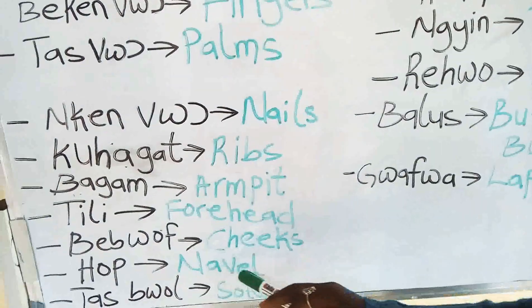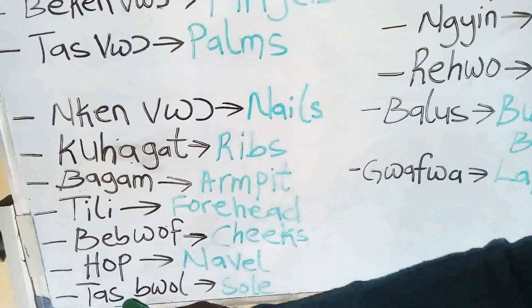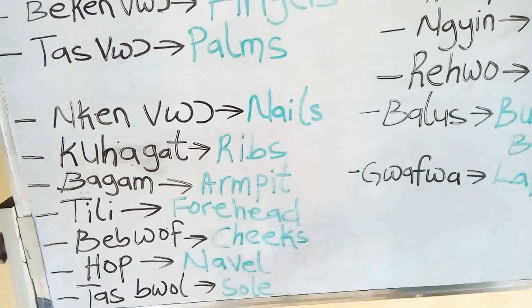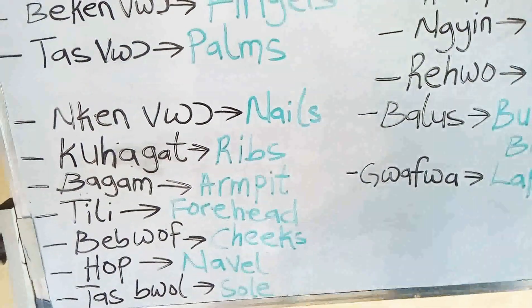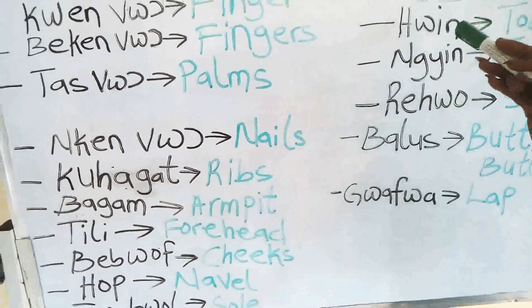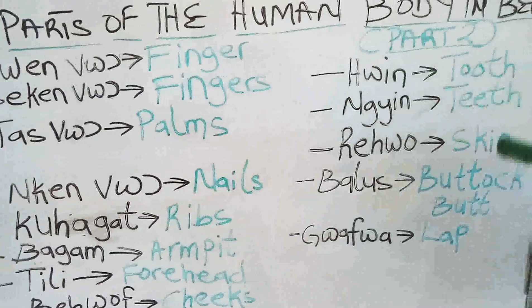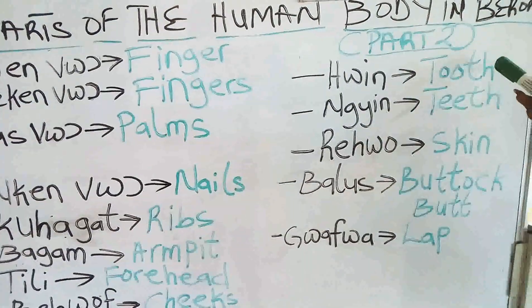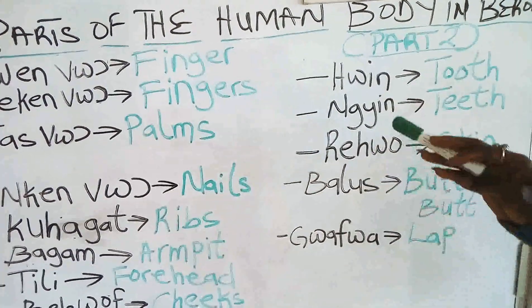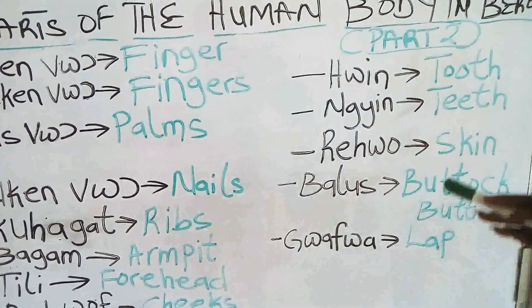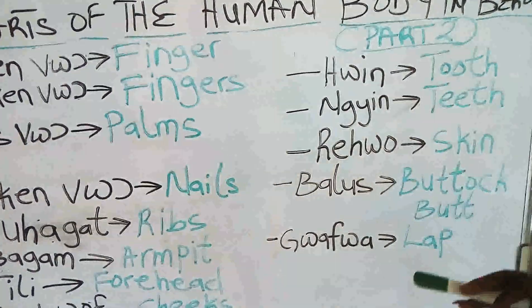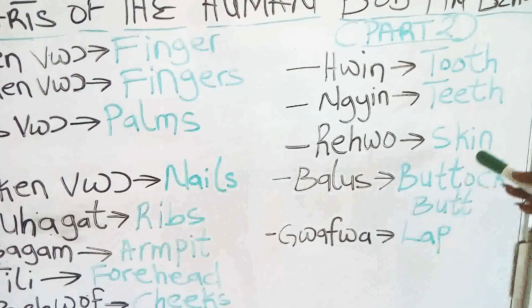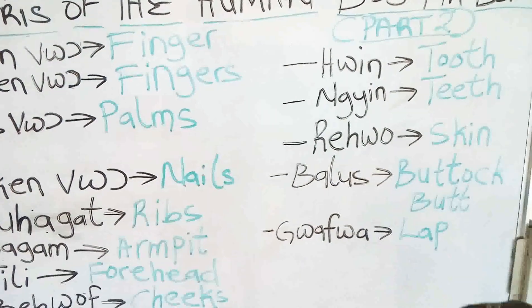Hope, nevel. Tasbol, soul. Kwen, tooth. Nyin, teeth. Rivo, skin.